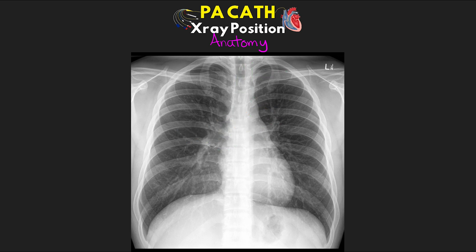Now let's talk about the relevant cardiovascular anatomy. First, we have our right atrium, which forms part of the cardiac contour on the patient's right. Coming into the right atrium, we have the superior vena cava and the inferior vena cava. Next, we have our right ventricle, located right about here. This is just where it's positioned, but it actually doesn't form any cardiac contours on the frontal x-ray.